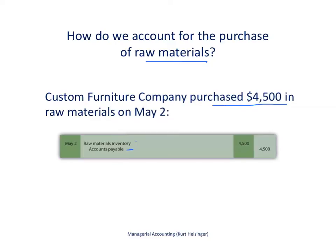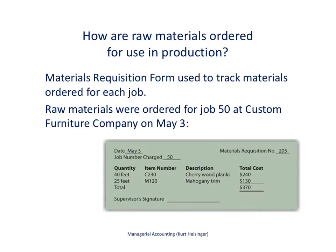These raw materials are high quality wood that will be used to build custom wood tables, and it's currently sitting in raw materials inventory. Now we need to know how to requisition that material — that is, how to order and pull it out of the raw materials warehouse and bring it into production. We use a materials requisition form to track materials that are ordered for each job, and you can see an example at the bottom of this page.